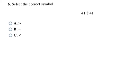Here I'm comparing 41 and 41. Right away I can see they're the exact same number — a 4 and a 1, and a 4 and a 1. Since they're exactly the same number, they are equal to each other, which is choice B.